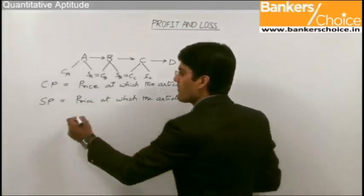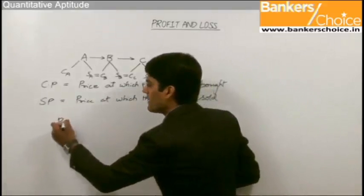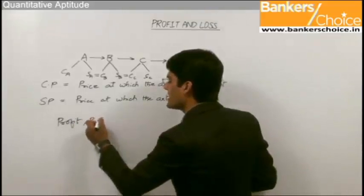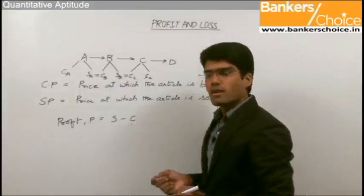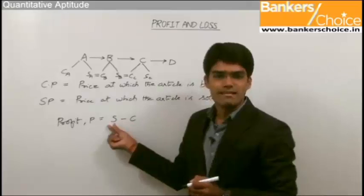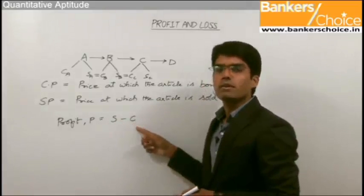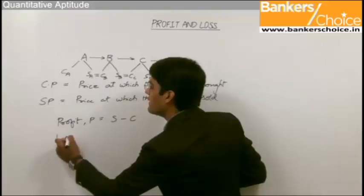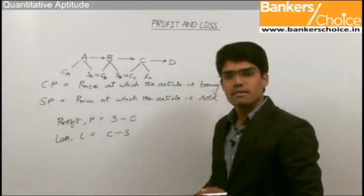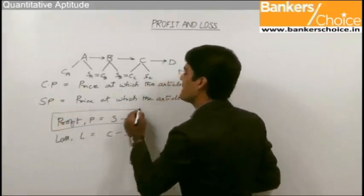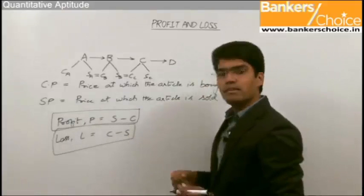To summarize: cost price is the price at which an article is bought; selling price is the price at which it is sold; and the selling price of one person equals the cost price of the next person. Profit and loss are both the difference between selling price and cost price. Profit P equals S minus C, where S is selling price and C is cost price. Loss L equals C minus S. Profit is S minus C because selling price is more, and loss is C minus S because cost price is more.